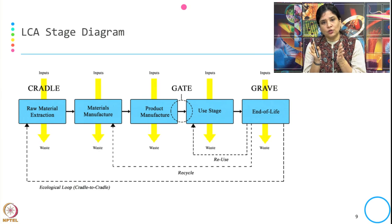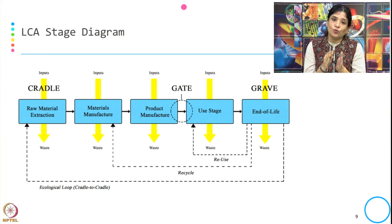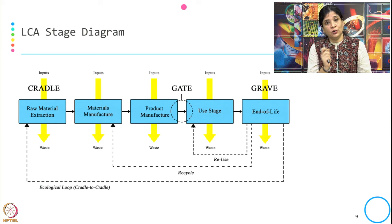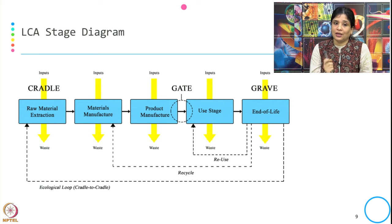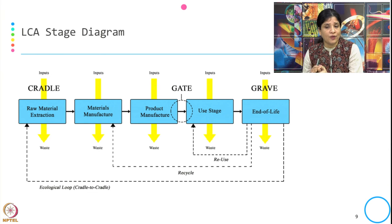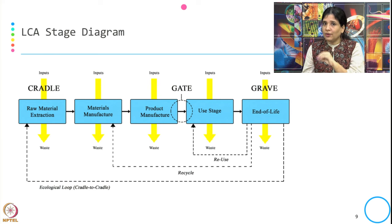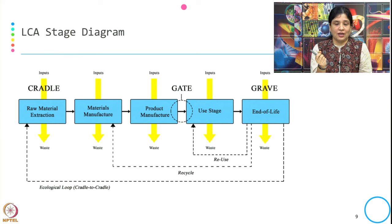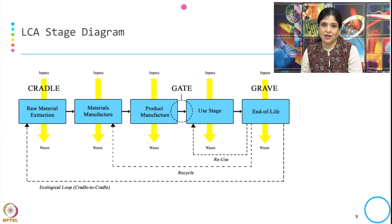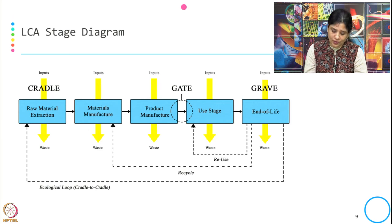Based on the scope of the environmental impact being analyzed, the variant changes between cradle-to-gate, cradle-to-grave, or cradle-to-cradle. The ecological loop is cradle-to-cradle — it means that after using and disposing of the product, it is recycled and brought back to the raw material stage of the product life cycle.